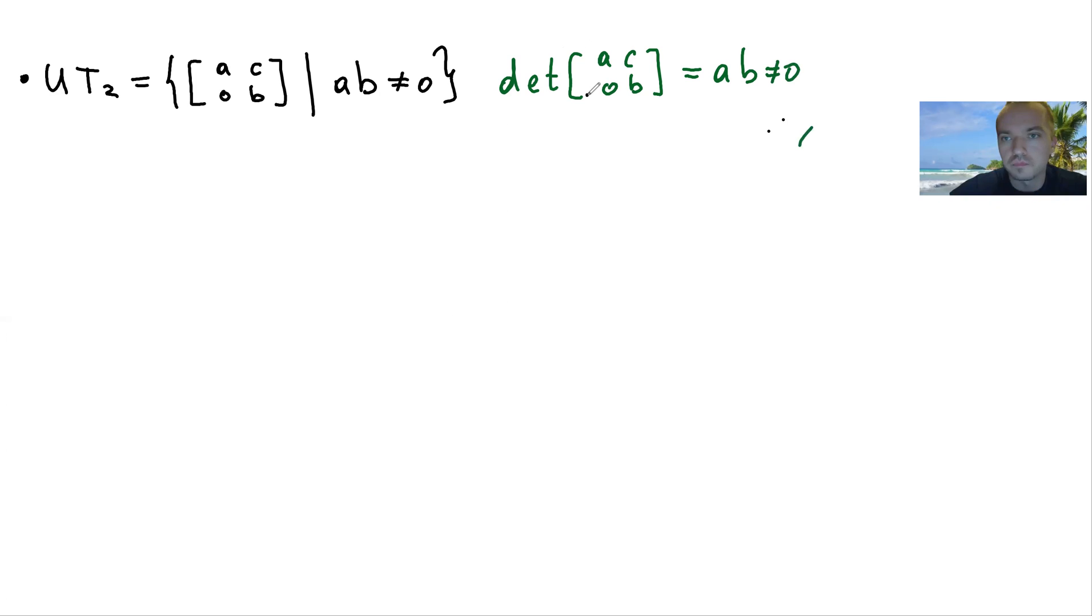So we can see that this actually is going to be a group. The properties which we need to check: that it's associative, that it has an identity element, and every element has its own inverse. And actually this is going to be a Lie group. A Lie group is a group which is at the same time a manifold.